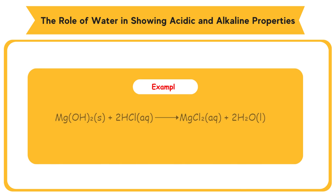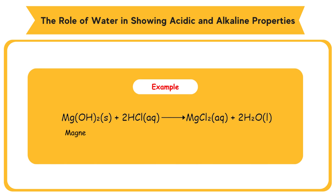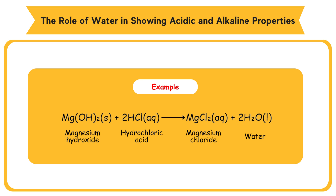Example: magnesium hydroxide, Mg(OH)2, reacts with hydrochloric acid, 2HCl, to form the magnesium chloride salt, MgCl2, and water, 2H2O.